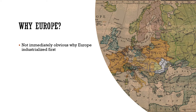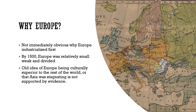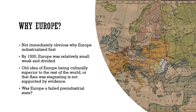When you look at Europe from a historical point of view in the early modern period, Europe really was relatively small and weak compared to other areas of the world, and definitely very divided. The old idea often taught in history classes — that Europe was culturally superior to the rest of the world, or that Asia was stagnating — is just nonsense not supported by any evidence. Nevertheless, we're still left wondering why Europe industrialized first. One possibility is looking at Europe as a failed pre-industrial state — the fact that Europe was so divided, with intense competition both militaristic and economic between countries, means Europe was never able to create a cohesive whole. And this may have been one factor that led to industrialization.